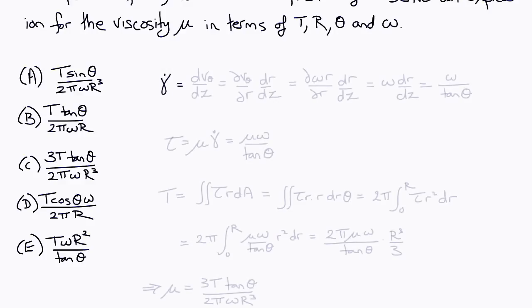First, let's calculate the shear rate γ̇, which is dvθ/dz. Now, vθ is a function of r, so this can be expanded as ∂vθ/∂r × dr/dz, which is ∂(ωr)/∂r × dr/dz, or ω dr/dz, and since dz/dr is tan θ, that is ω over tan θ.